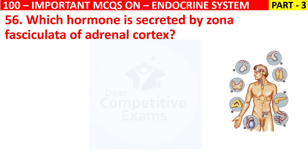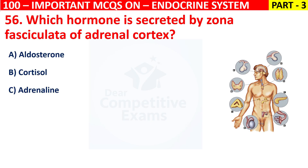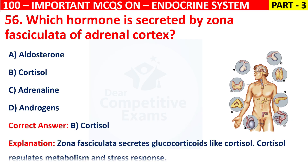Which hormone is secreted by the zona fasciculata of the adrenal cortex? Your options are Aldosterone, Cortisol, Adrenaline, or Androgens. The correct answer is B, that is Cortisol. The zona fasciculata secretes glucocorticoids like cortisol. Cortisol regulates metabolism and stress responses.